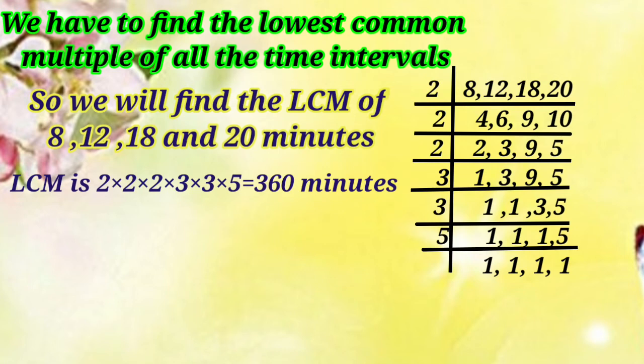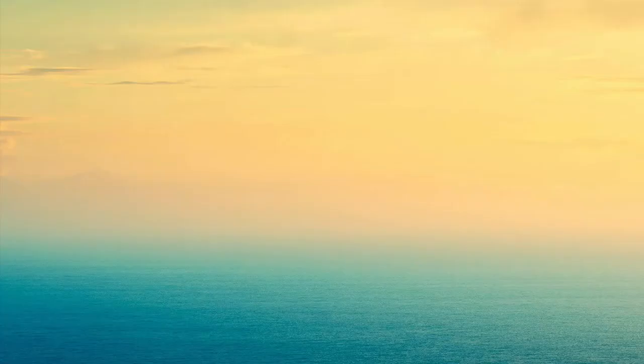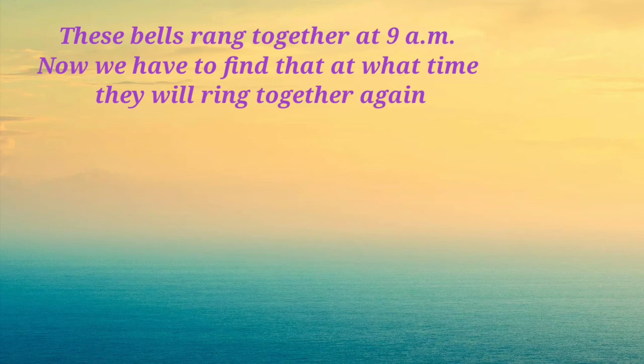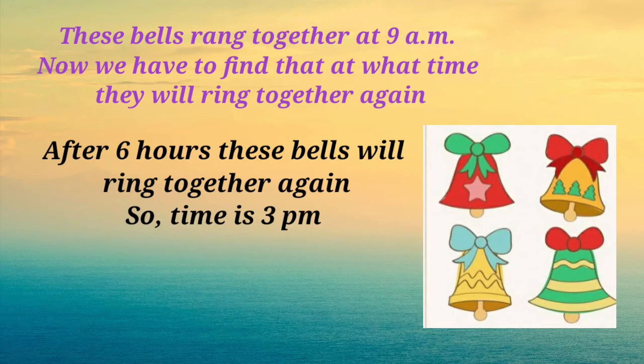Now this 360 is in minutes, so we are converting it to hours. 360 divided by 60 gives 6 hours. These bells rang together at 9 am, and we have to find at what time they will ring together again. So after 6 hours these bells will ring together again, meaning the time will be 3 pm.